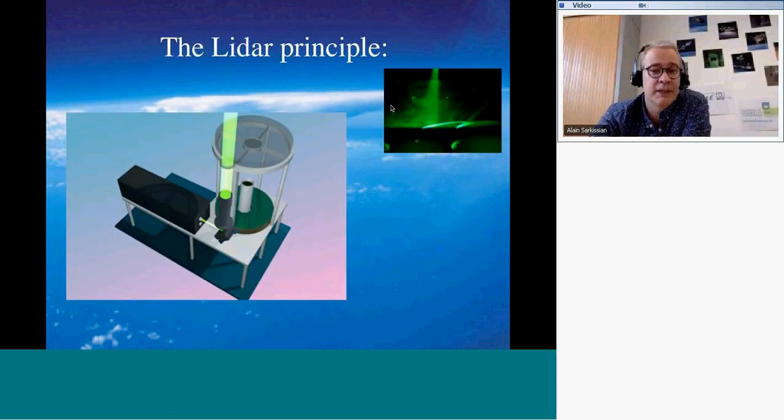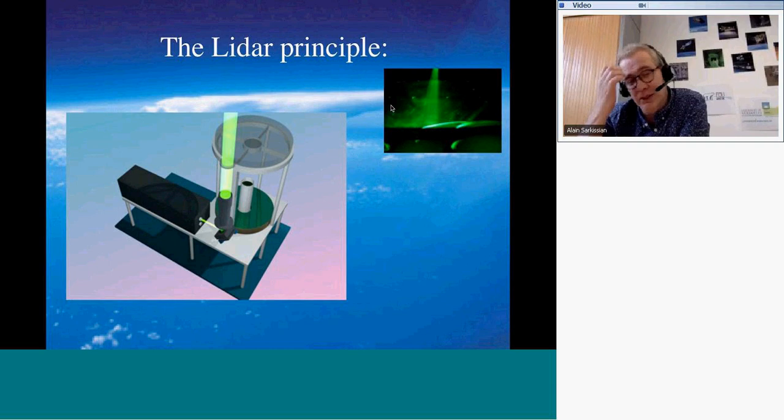Then we will explain more specifically the LIDAR. And of course the main part of the LIDAR is the laser. So we have to explain what is a laser. And we collect the signal using a telescope. So we will also explain how we do that and how this type of instrument is made.